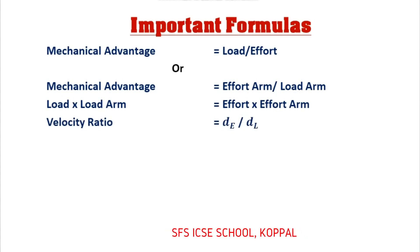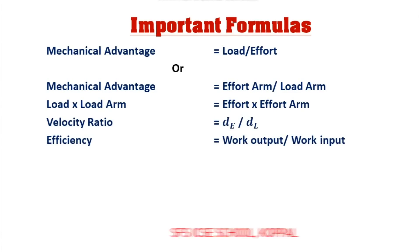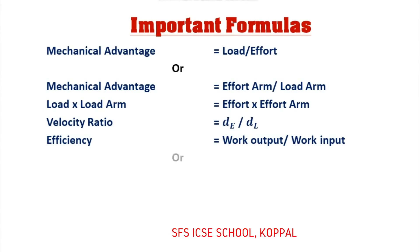Number 4: Efficiency is equal to work output divided by work input, multiplied by 100. Number 5: Efficiency is equal to mechanical advantage divided by velocity ratio.